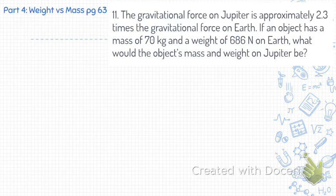Number 11 is the problem, and we'll just do it together. The gravitational force on Jupiter is approximately 2.3 times the gravitational force on Earth. If an object has a mass of 70 kilograms and a weight of 686 newtons on Earth, what would the object's mass and weight on Jupiter be?